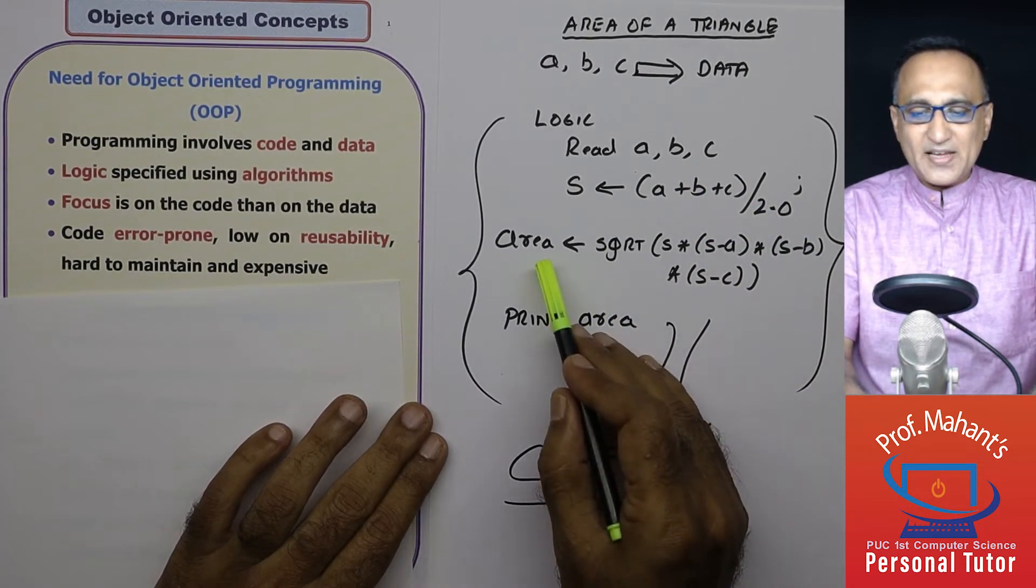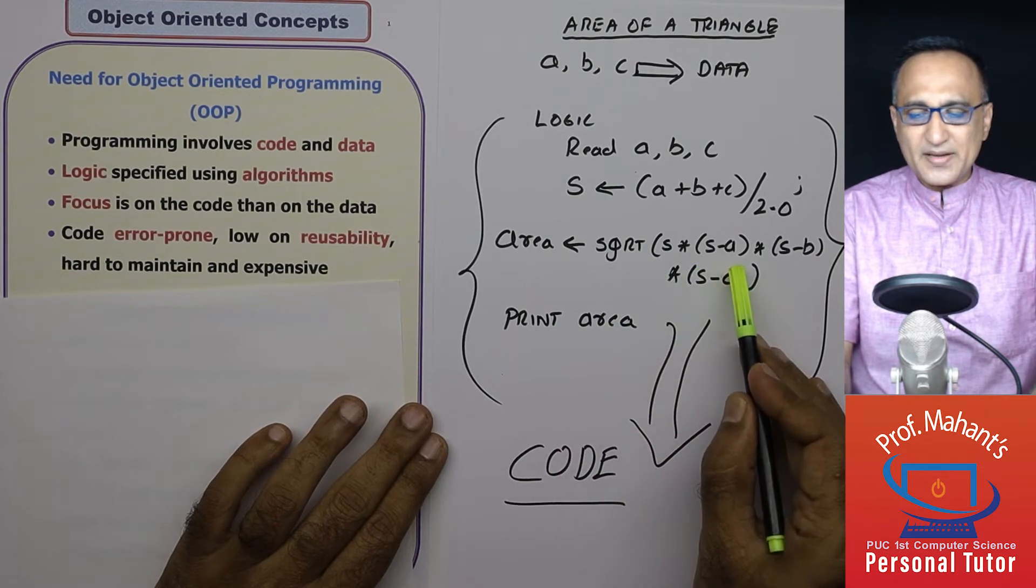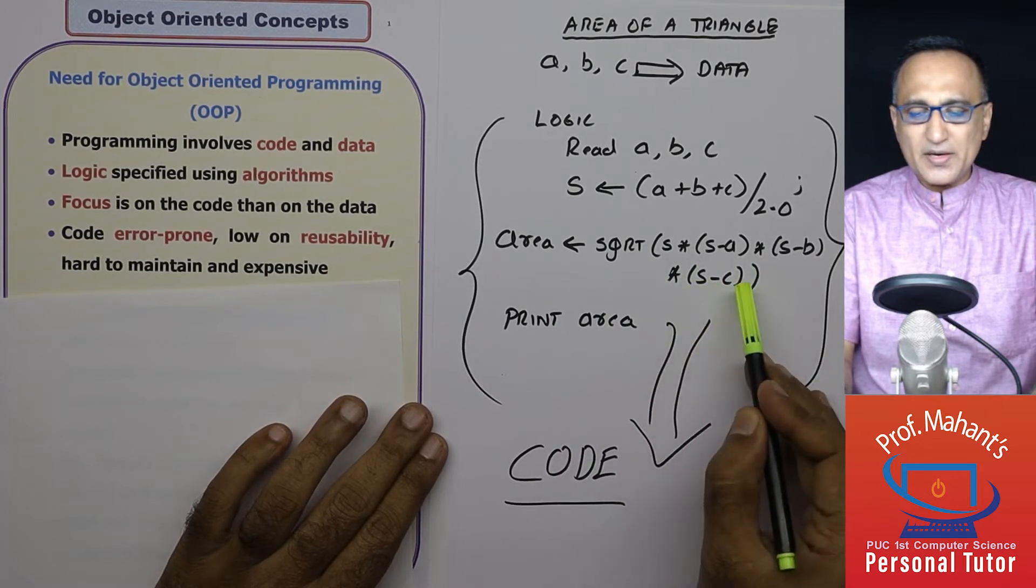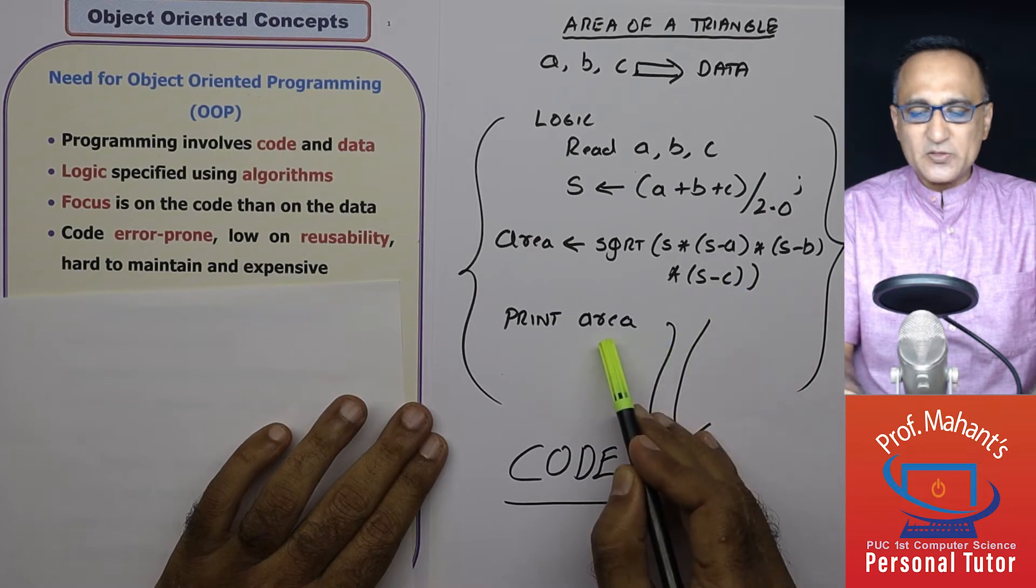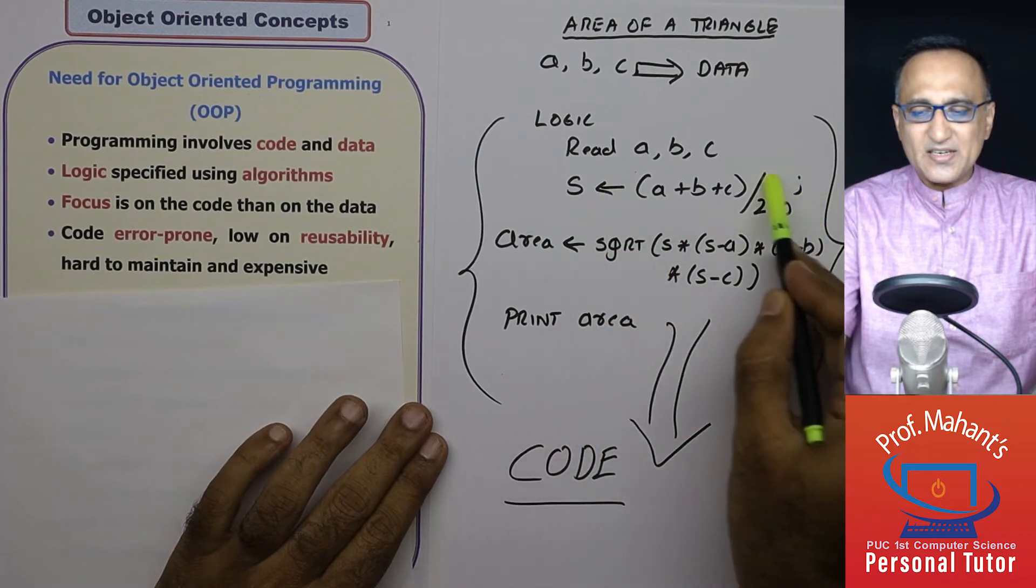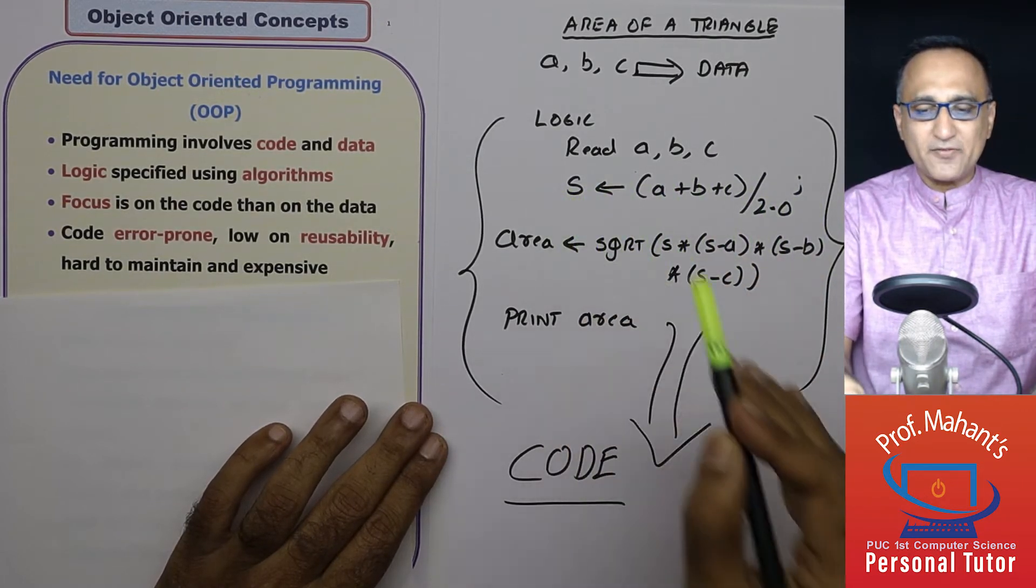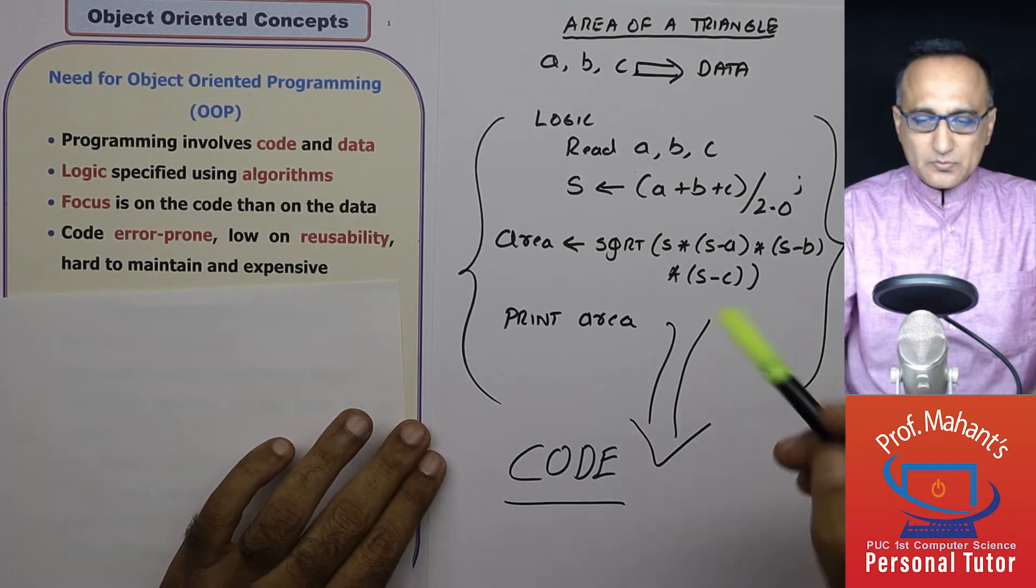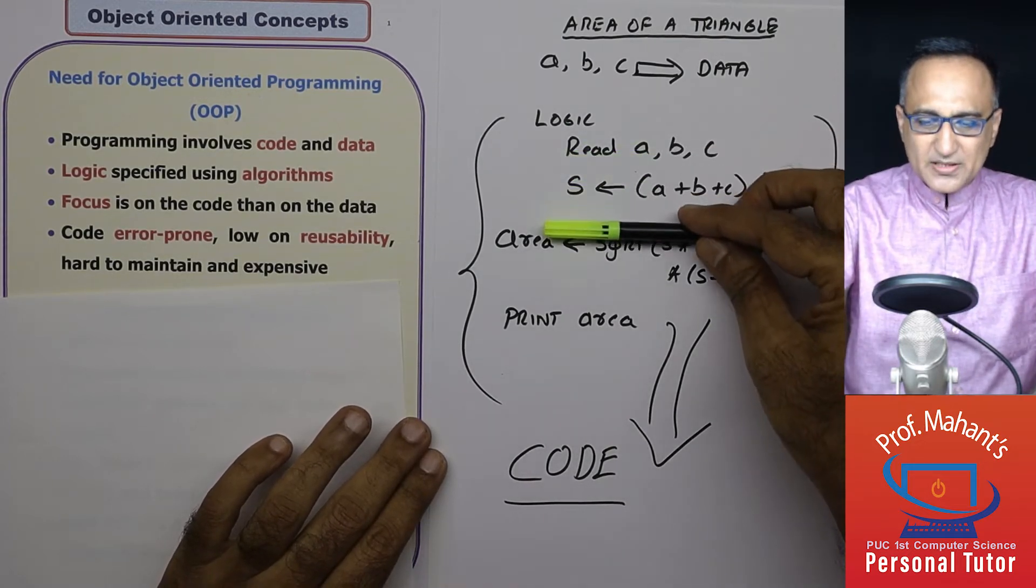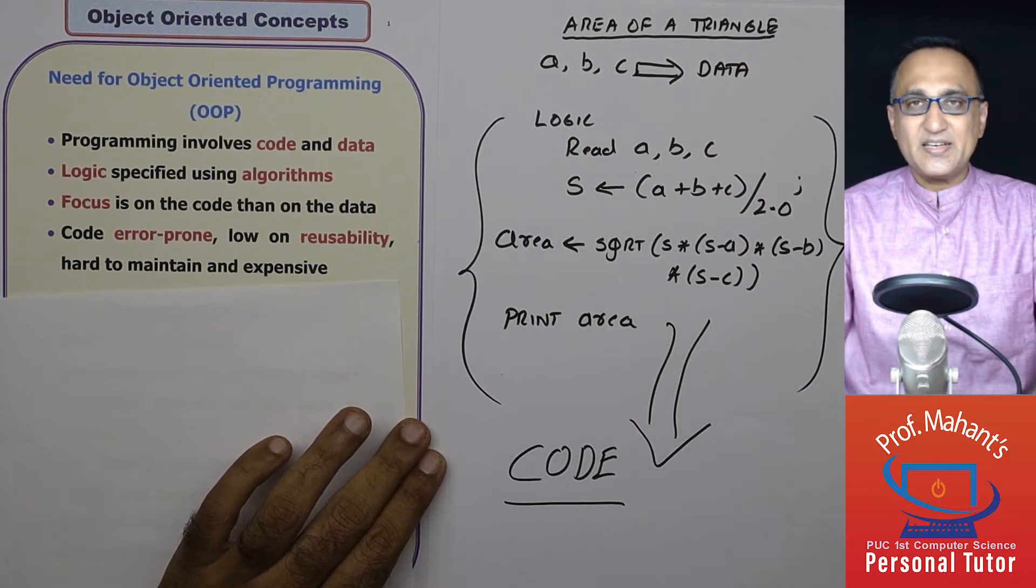And then finally I calculate area as a square root of S into S minus A into S minus B into S minus C, and then I display, write or print the area. This stands for assignment in the sense the calculations on this side are copied onto the memory location on the left hand side.